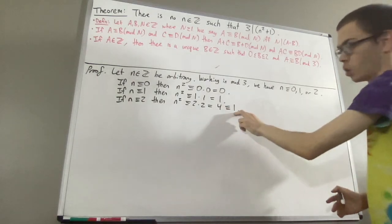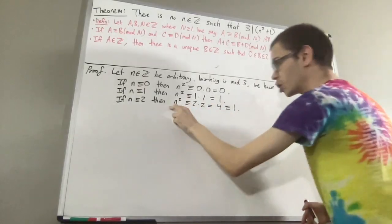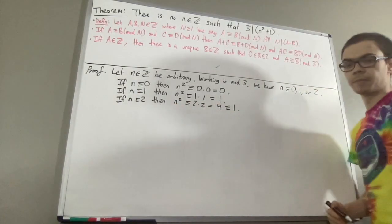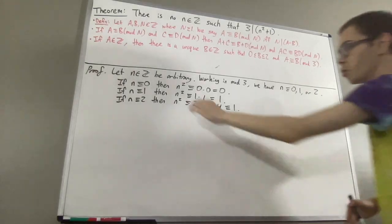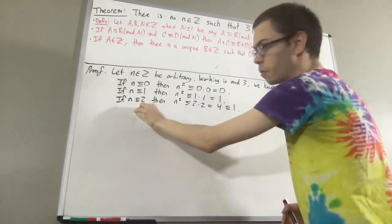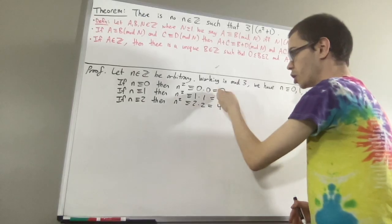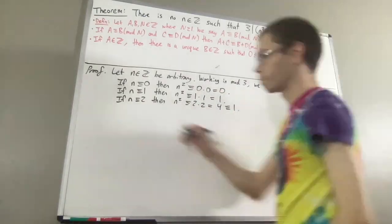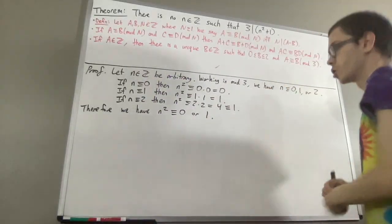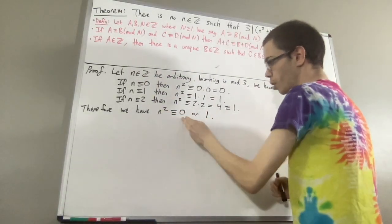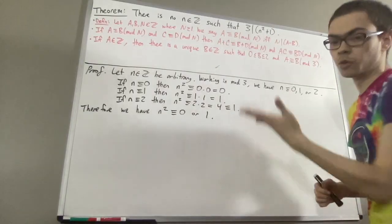So 4 is congruent to 1 in mod 3, which shows that n squared is congruent to 1 in that case. So no matter what case we have, n squared is going to be congruent to 0 or 1 mod 3.